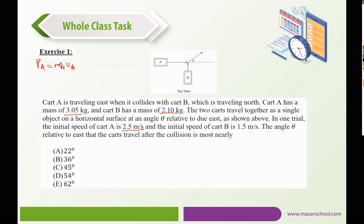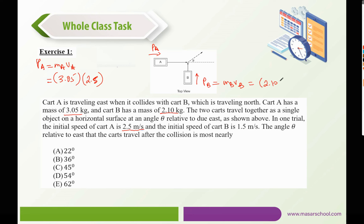That would be 3.05 multiplied by 2.5. This is the only momentum we have along the horizontal. The momentum along the vertical would be P_B, which is M_B multiplied by V_B, and that would be 2.10 multiplied by 1.5. We know that during a collision the linear momentum is conserved for an isolated system, so P initial equals P final, meaning the horizontal component stays the same — P_A remains P_A — and the vertical component stays the same — P_B remains P_B.